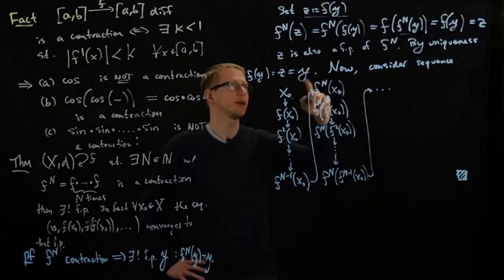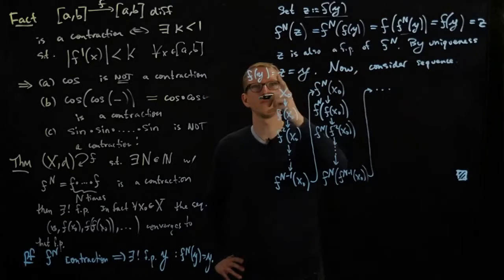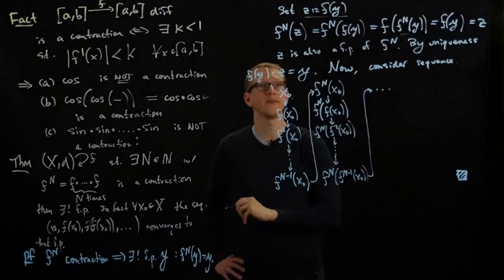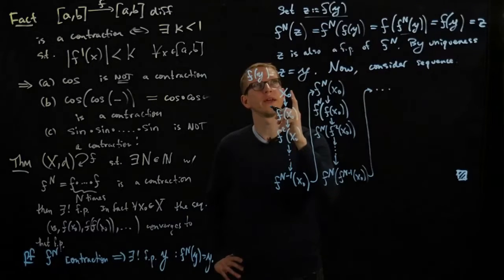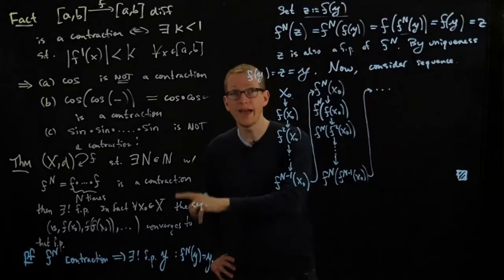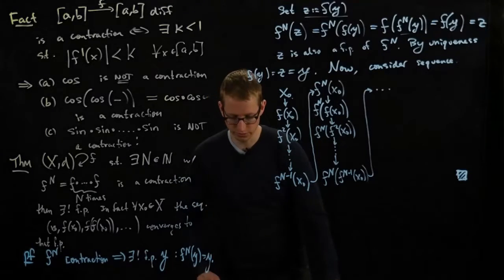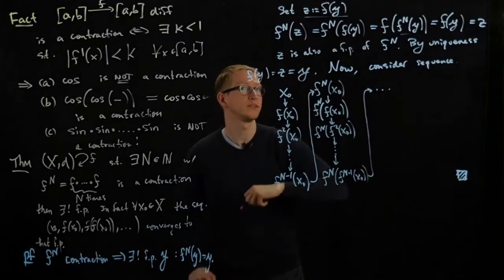And I realized I forgot to mention: uniqueness gave us that y is a fixed point of f as well, but we didn't prove that that's the unique fixed point of f. I should also mention that—so let me, this is a little ad hoc, but let me squeeze this in here.